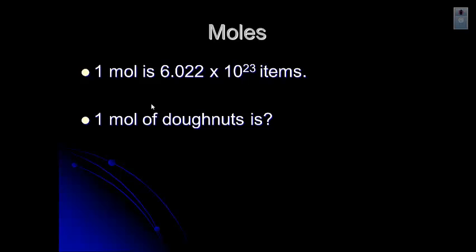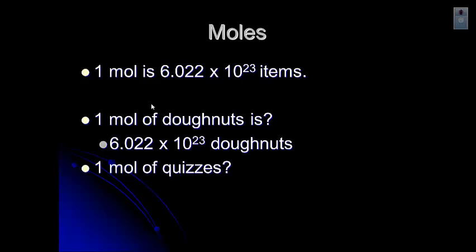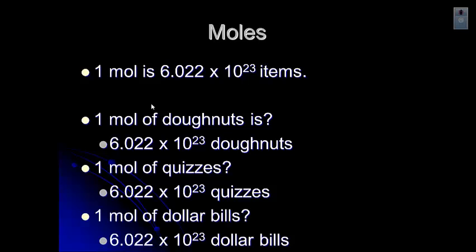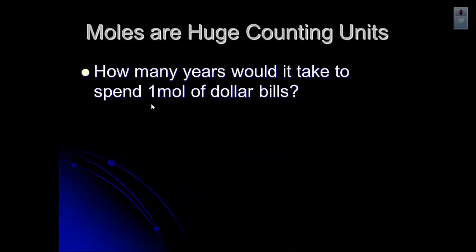So let's talk a little bit more about these moles. So one mole is 6.022 times 10 to the 23rd items. It always is. Just like a dozen donuts is always 12. And so if we have a mole of donuts, how many is that? 6.022 times 10 to the 23rd. I think we'd have Krispy Kreme running, wouldn't we? A mole of quizzes. I'm sure you feel like you've taken a mole of quizzes by now. That would be 6.022 times 10 to the 23rd quizzes. Mole of dollar bills. Wouldn't we all like to have that? 6.022 times 10 to the 23rd dollar bills. Now, let's talk about that. Do you think you could spend a mole of dollar bills? How long would it take you?